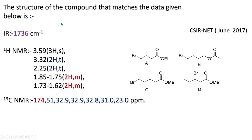Now if you come to the 1H NMR data, they have given five signals. If you see option D, there is a one-hydrogen multiplet. This hydrogen will couple with these two hydrogens and also with these two hydrogens — first it will give a triplet, and that triplet will be again split by a triplet, so triplet of triplet, in short we can say multiplet.